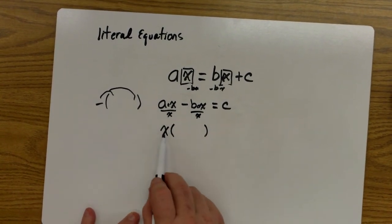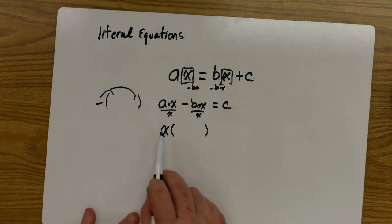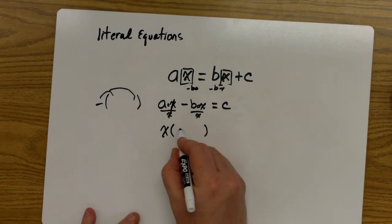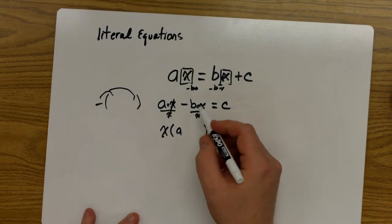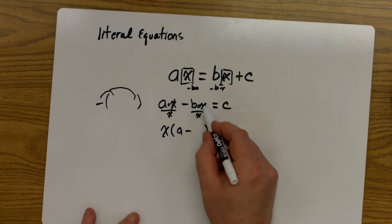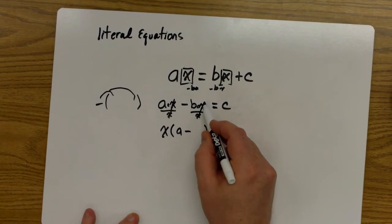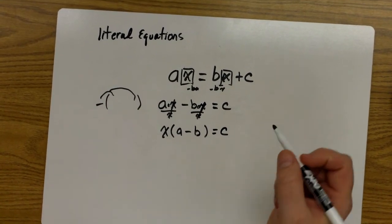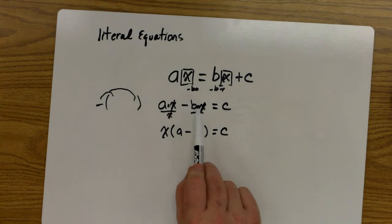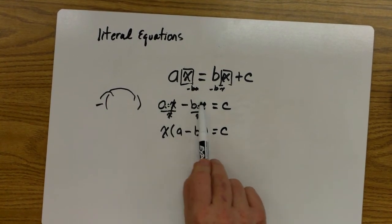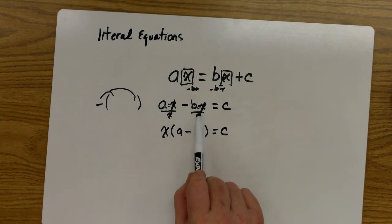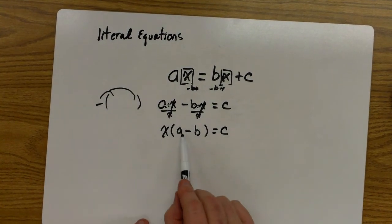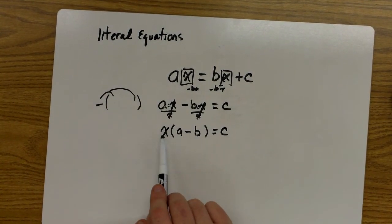So instead of having an X in two places, I have it out here in one place. Well, AX divided by X, that becomes a 1. That leaves us with just A. Bring down my minus sign, BX over X, the X has become 1. 1 times B is just B, still equal to C. So even though I had the X in two locations, and I couldn't combine them together because they weren't like terms, I was able to factor or divide an X outside. Instead of having two X's here and here, I have one X on the outside.